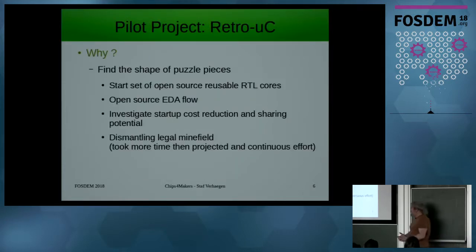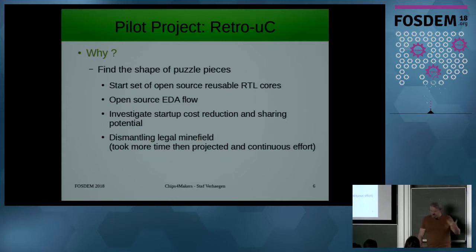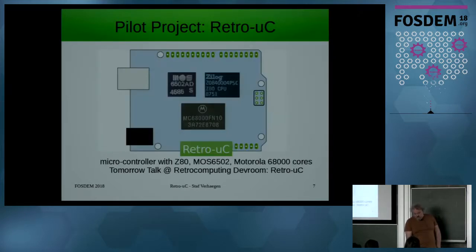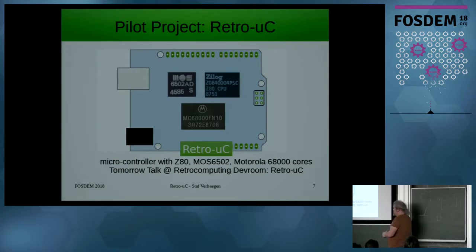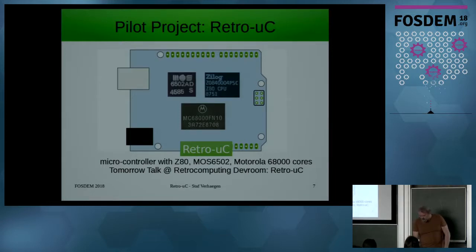So I'm doing a pilot project — it's a crowdfunded project. The purpose is to get the first set of reusable cores to test the flow, investigate where all the startup costs are and where we can reduce them, and also look at what is needed or wanted by the foundries from the legal side. This is the retro microcontroller — it has a Z80 core, a MOS 6502, and a Motorola 68000 on it. I'll detail that tomorrow in the RetroKubain dev room. Here I'm focusing on my experience with the open-source toolchain.